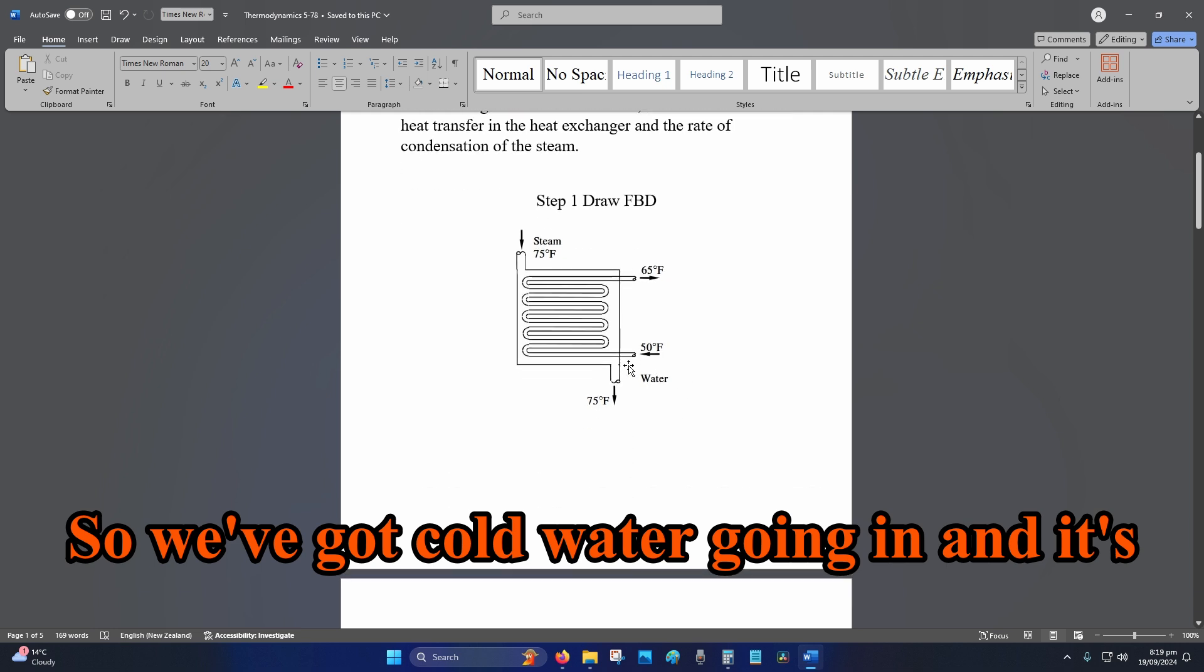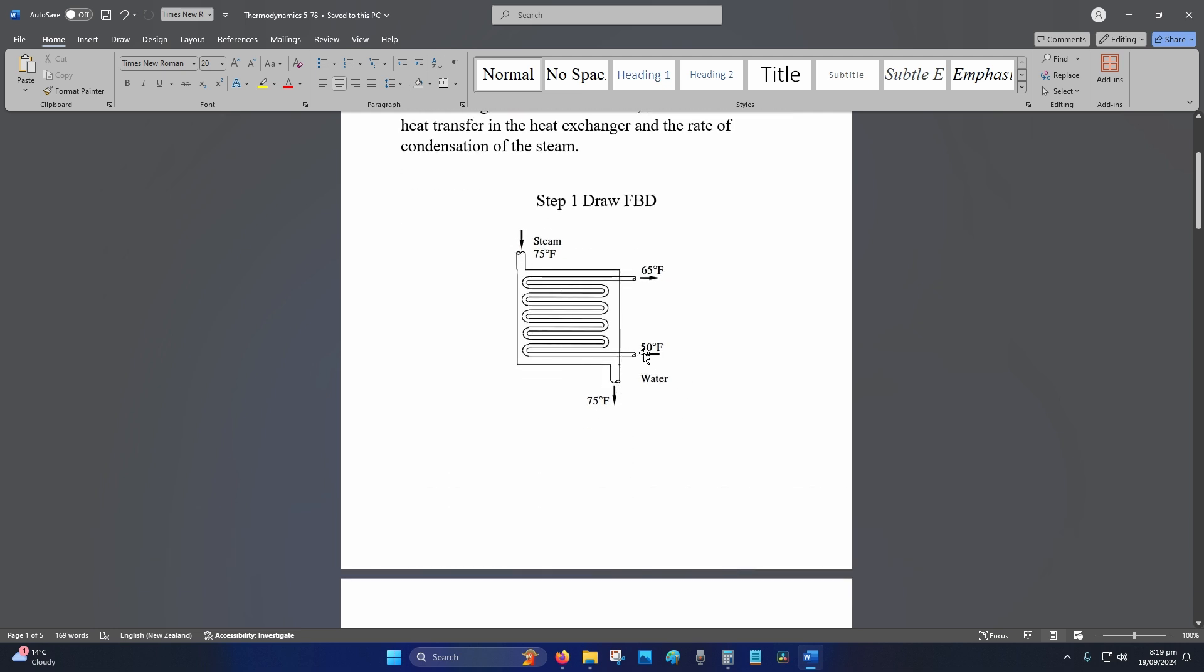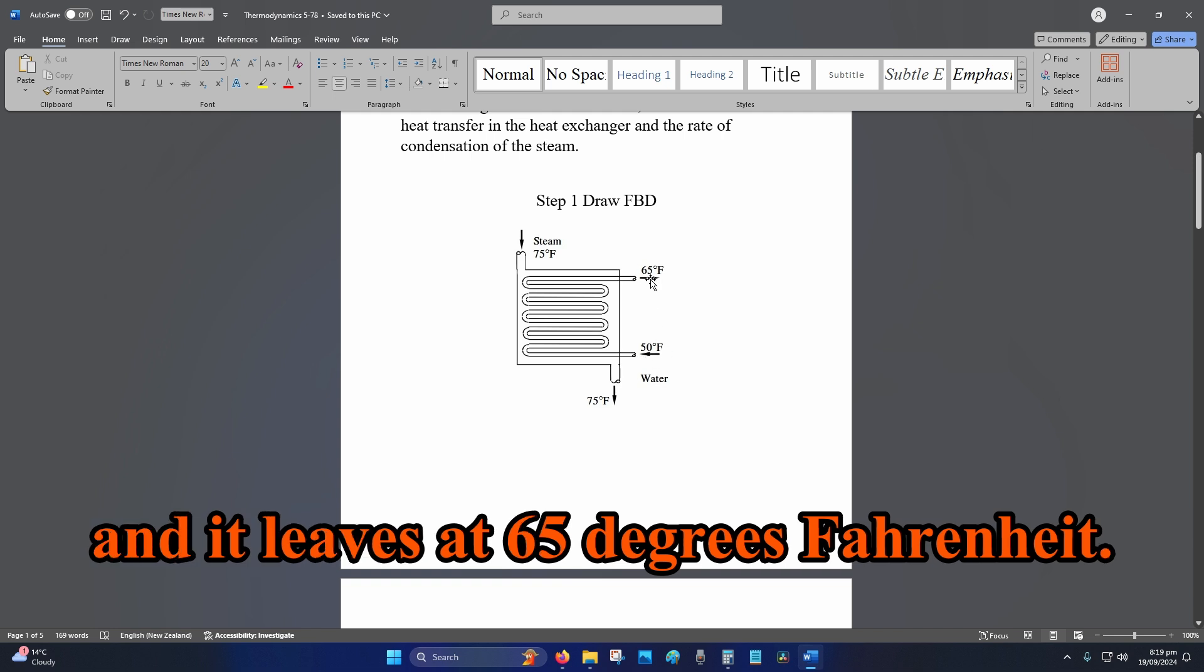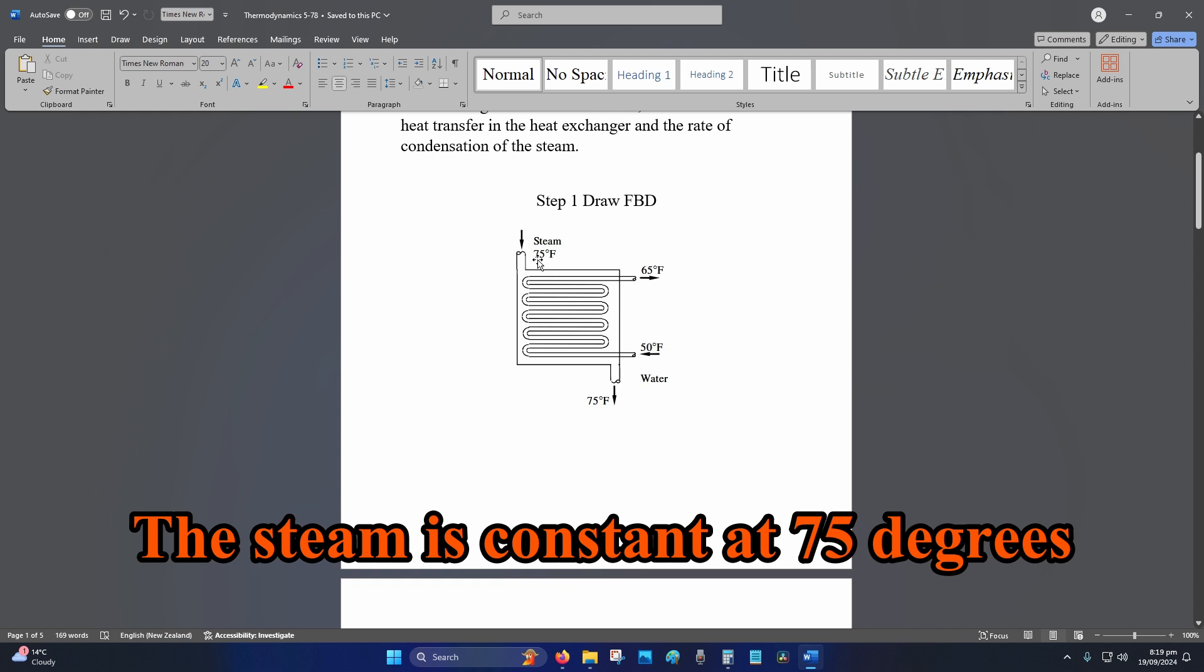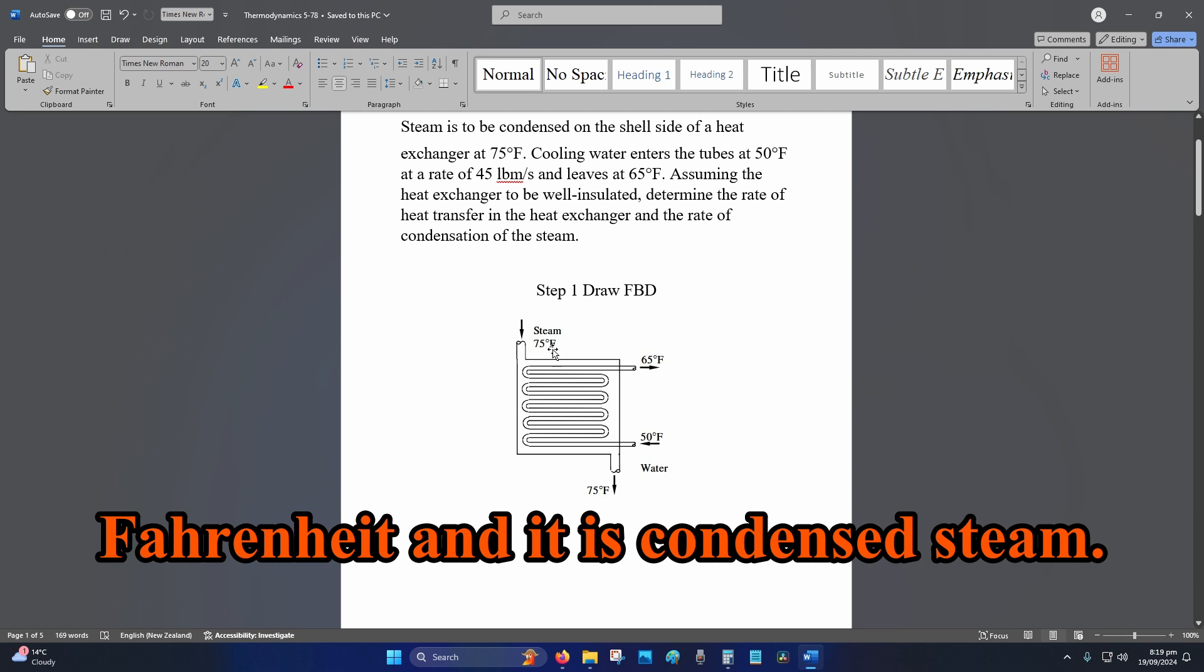So we've got cold water going in and it's being warmed up by the steam. So it goes in at 50 degrees Fahrenheit and it leaves at 65 degrees Fahrenheit. The steam is constant at 75 degrees Fahrenheit and it is condensed steam.